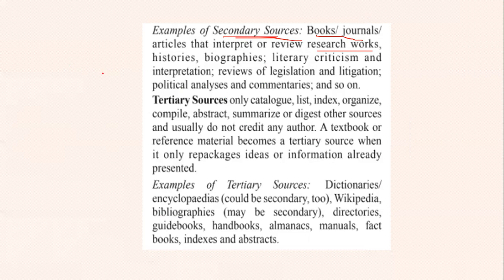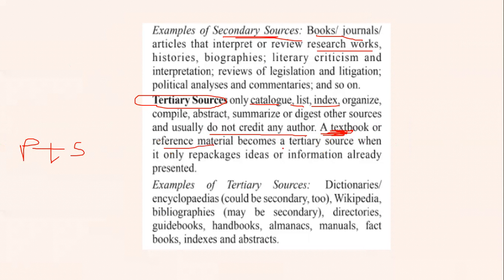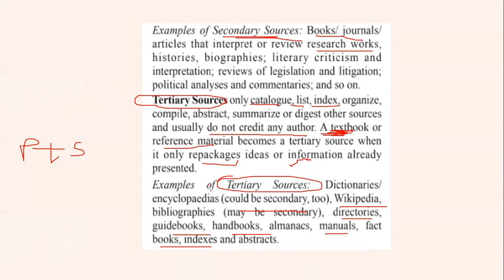When we come to tertiary sources, it is nothing but a combination of primary plus secondary. Tertiary sources catalog, list, index, organize, compile, abstract, summarize, or digest other sources, and usually they do not give credit to any author. A textbook or reference material becomes a tertiary source when it only repackages ideas or information already presented. Examples include dictionaries, encyclopedias, Wikipedia, directories, guidebooks, handbooks, manuals, and indexes — all become part of tertiary sources.